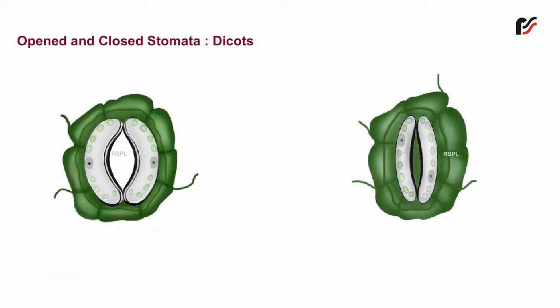Each stoma is bounded by two guard cells which, unlike the other epidermal cells, possess chloroplasts. The epidermal cells in the vicinity of guard cells become specialized in their size and shape and such cells are called subsidiary cells.